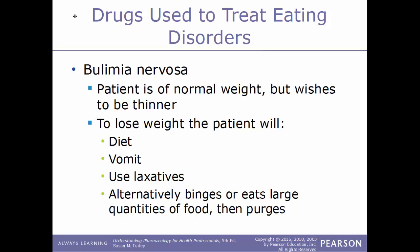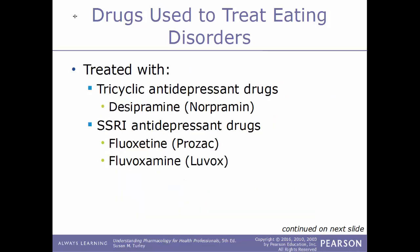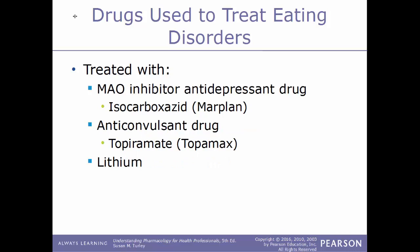In bulimia nervosa, the patient will diet, make themselves vomit, use laxatives, and alternatively binge on large amounts of food and then purge, so the body cannot absorb the nutrients. Bulimia nervosa can be treated with tricyclic antidepressants such as desipramine (Norpramin), SSRIs like fluoxetine (Prozac) or fluvoxamine (Luvox), MAO inhibitors such as isocarboxazid (Marplan), the anticonvulsant topiramate (Topamax), and lithium.